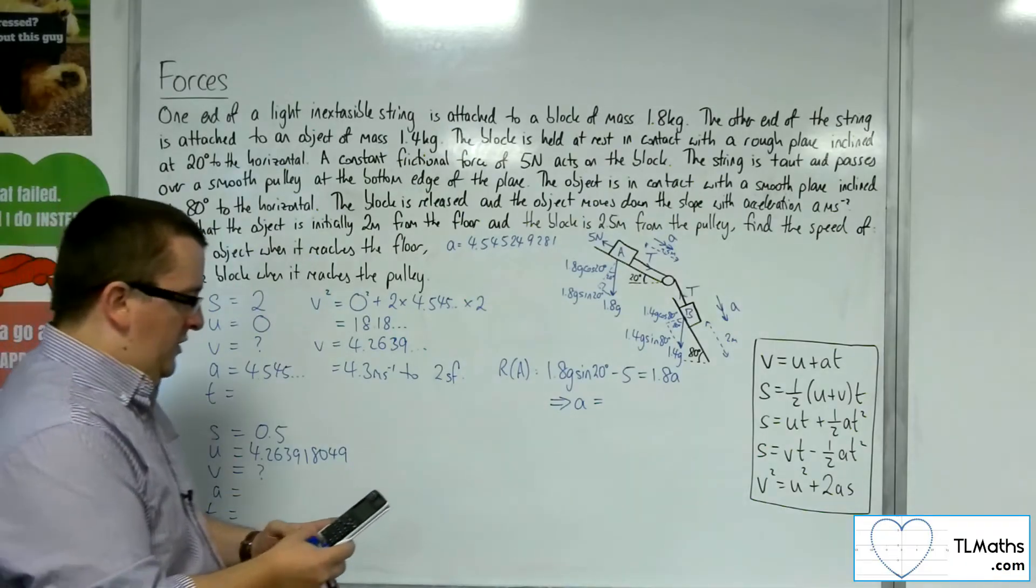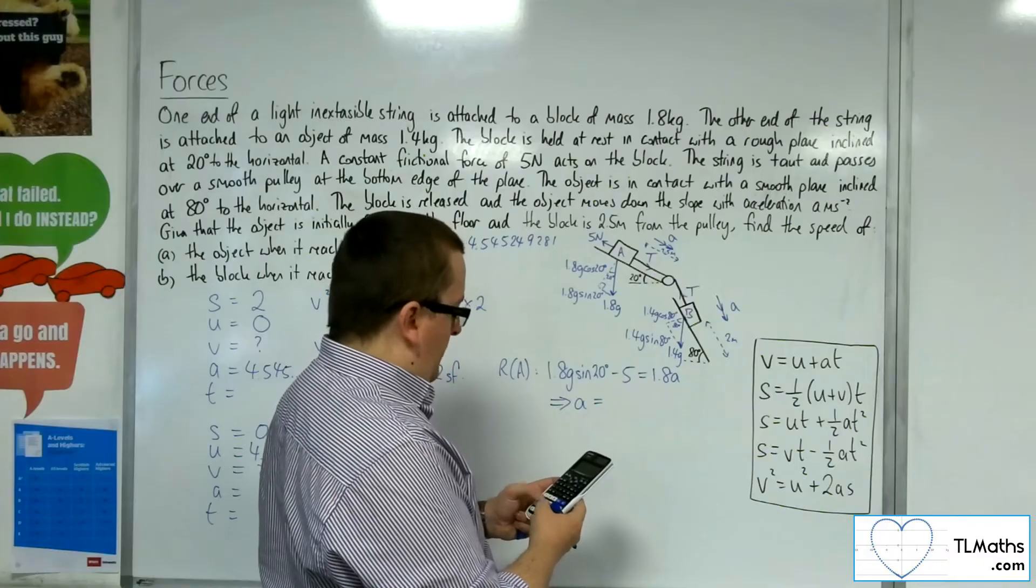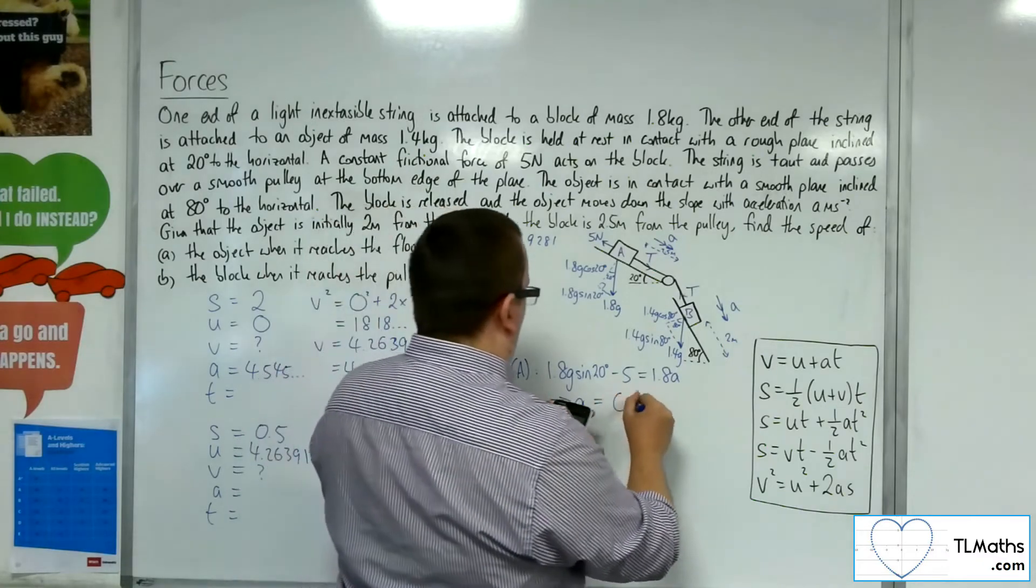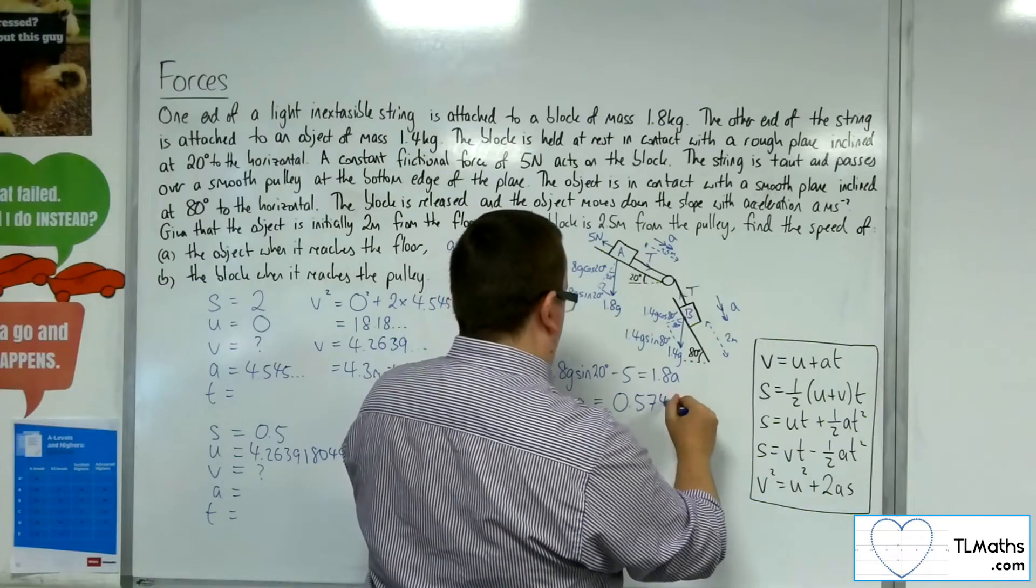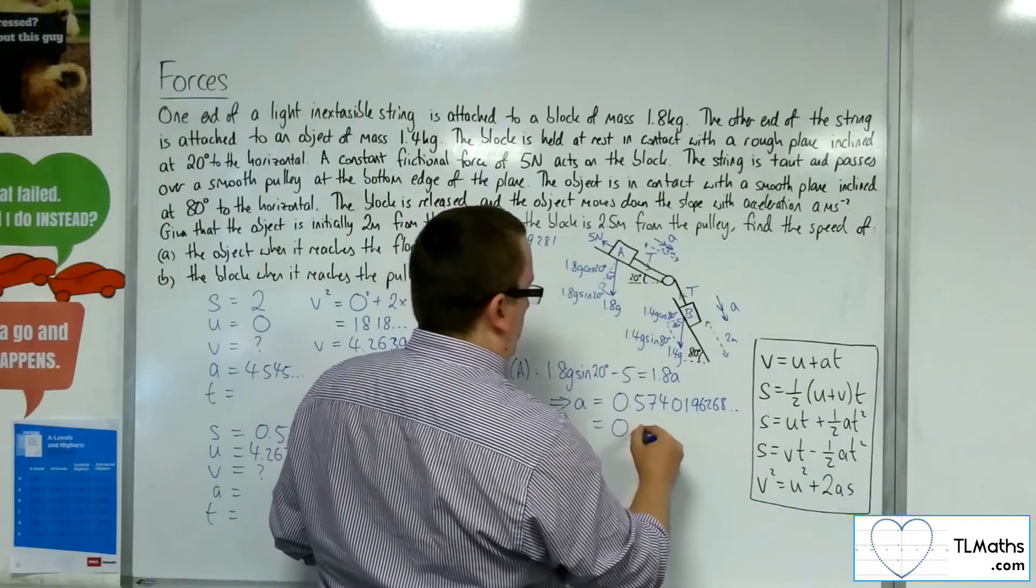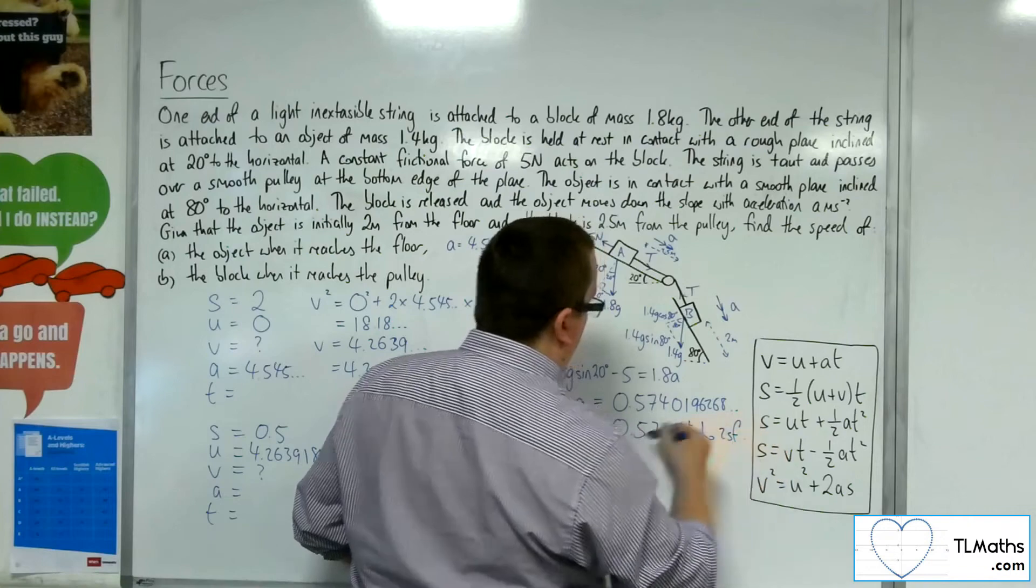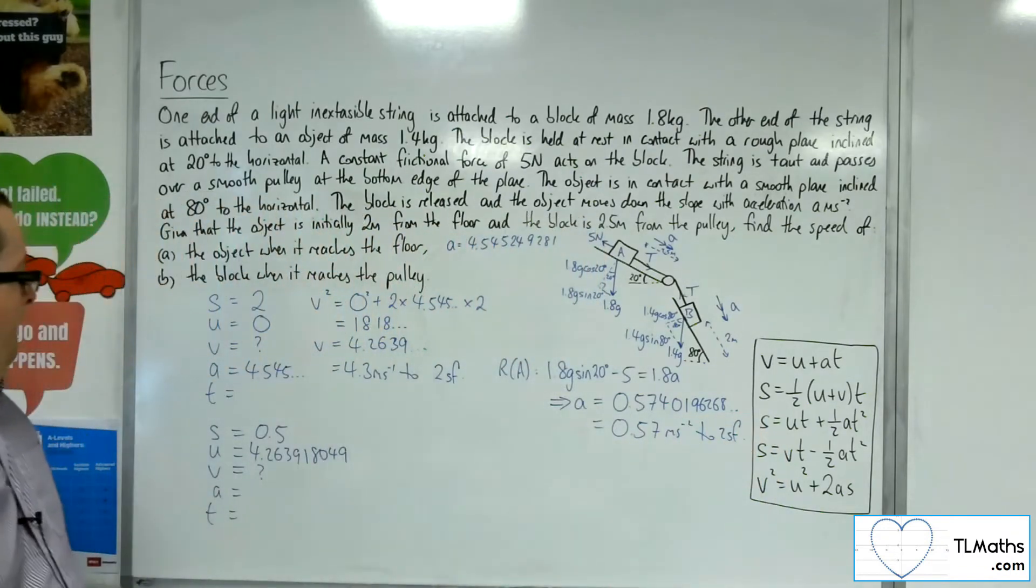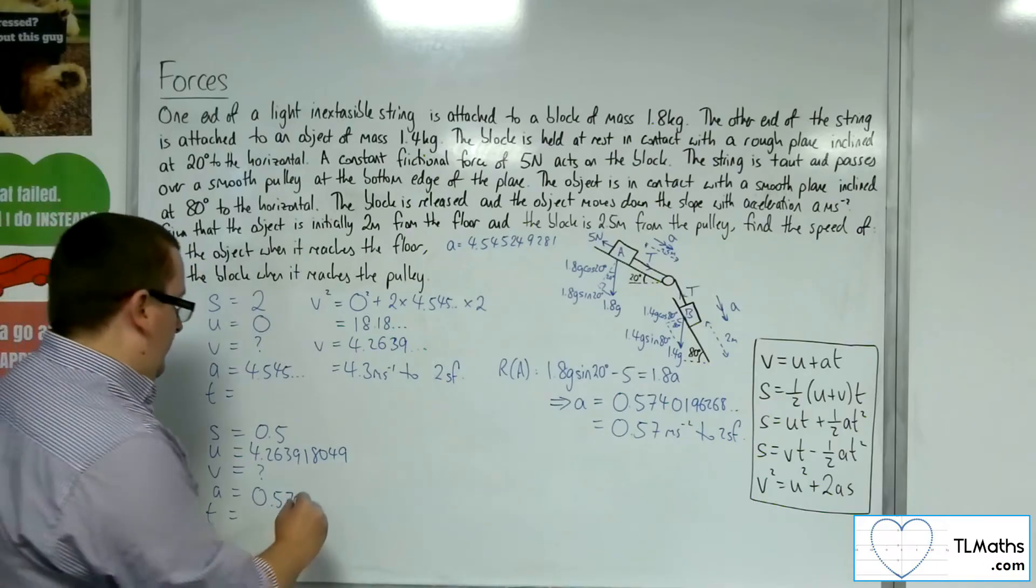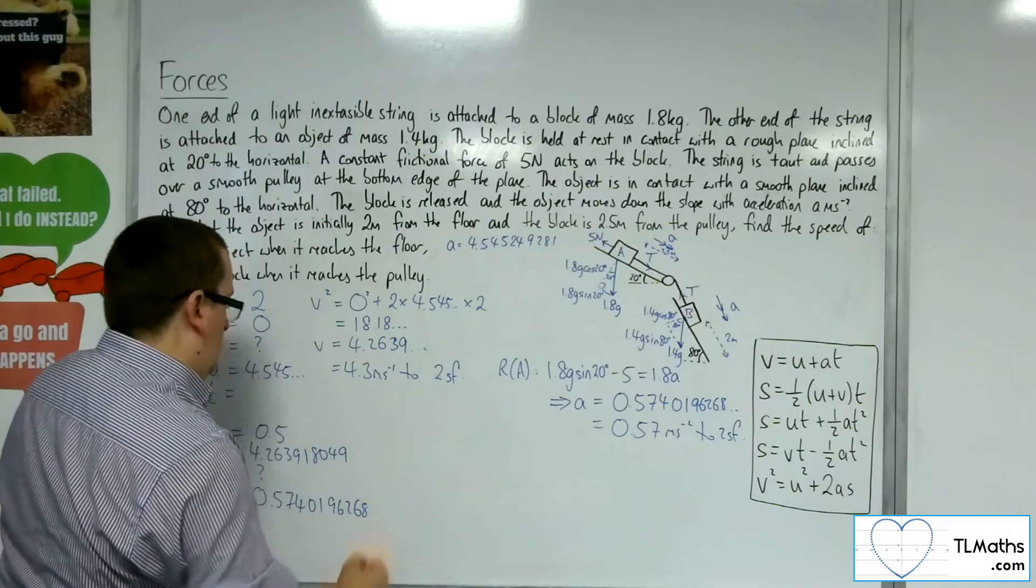That allows me to work out A. We've got 1.8 times 9.8 times sine 20, minus 5, divided by 1.8, which gives 0.5740196268. So 0.57 meters per second squared to 2 sig fig. That is the acceleration I'm using.